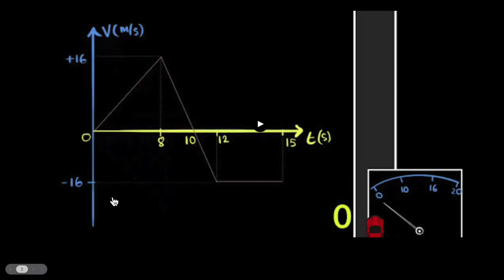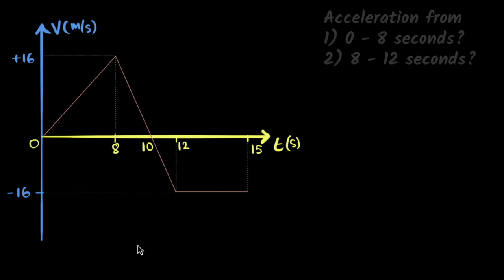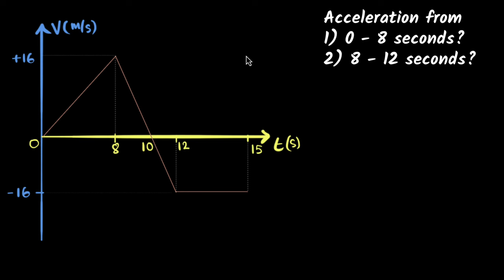So that's basically how you make sense of a velocity-time graph. Now let's see if we can solve a few questions on velocity-time graphs. The first question: we want to calculate the acceleration from zero to eight seconds, and also the acceleration from eight to twelve seconds. Acceleration is calculated as final velocity minus initial velocity, divided by the time taken.